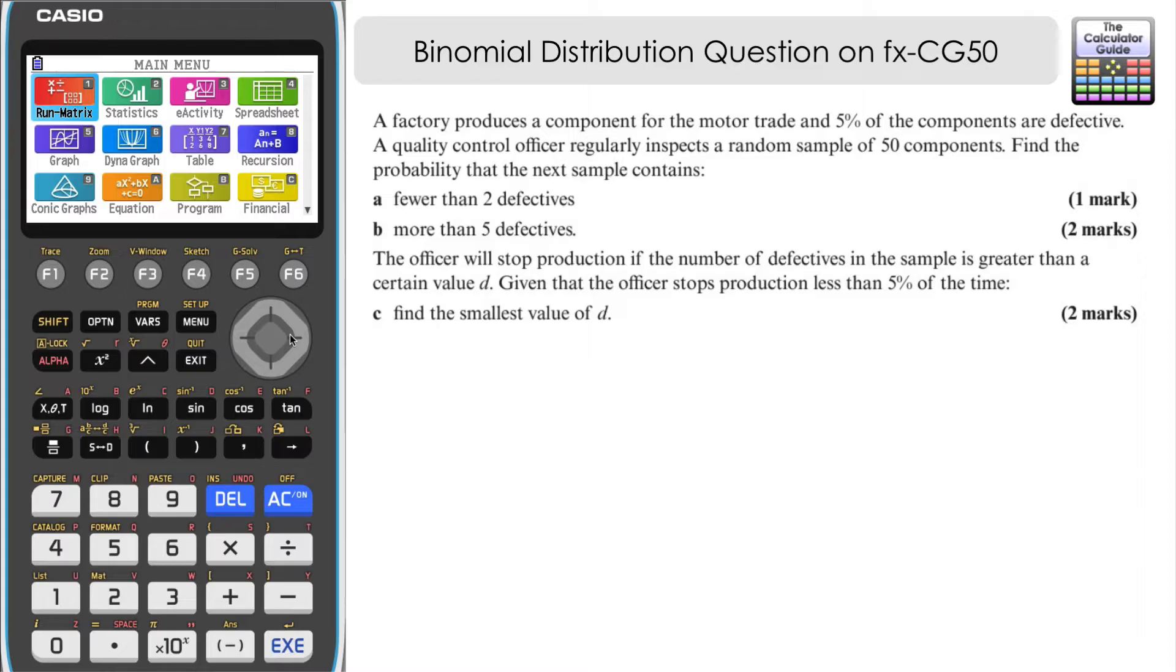A factory produces a component for the motor trade and 5% of the components are defective. A quality control officer regularly inspects a random sample of 50 components. Find the probability that the next sample contains. And then we've got three different questions to answer on that. Well, before we get started, let's just model this particular situation.